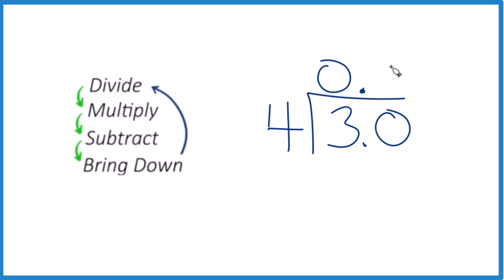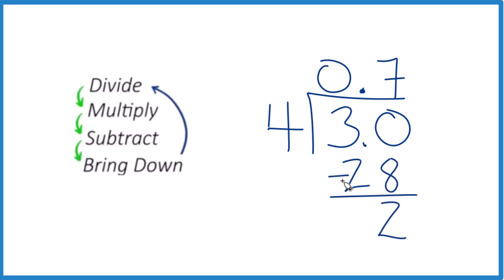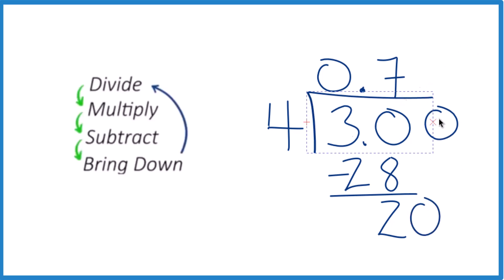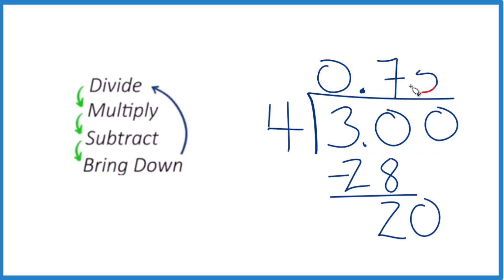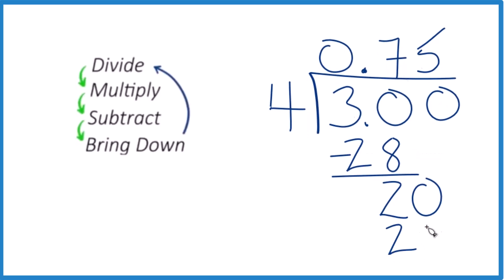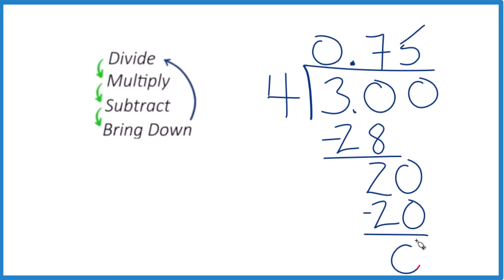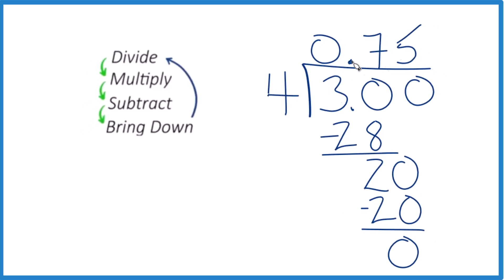So now 7 times 4, that would give us 28. 30 minus 28 is 2. 4 doesn't go into 2. What we can do is put another 0 here, because 3.00, that's still 3 — bring that down. We're going to move over a decimal place, and now 4 goes into 20, 5 times. 5 times 4 is 20. Subtract, no remainder, and we're done. So 4 goes into 3, 0.75 times. 0.75 times 4, that'll give you 3.